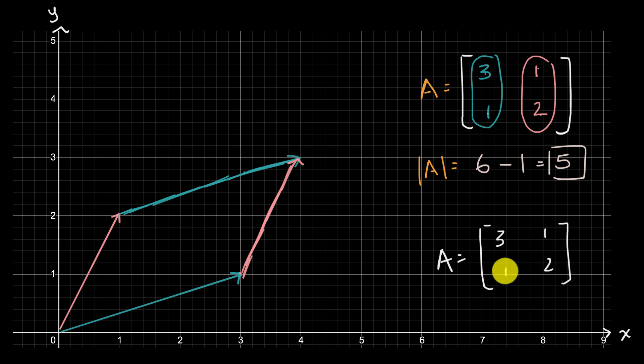So we know what a transformation matrix does. It tells us what to do with the unit vectors. So for example, I have this vector right over here, which is the vector one, zero. We know that a transformation matrix says, all right, take that one, zero vector and turn it into the three, one vector. So turn that into that right over there.